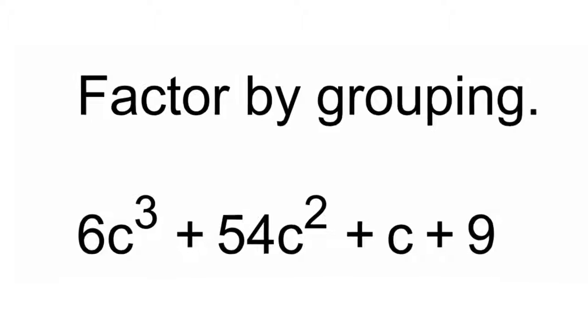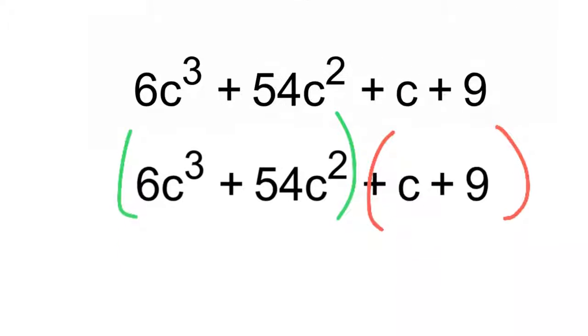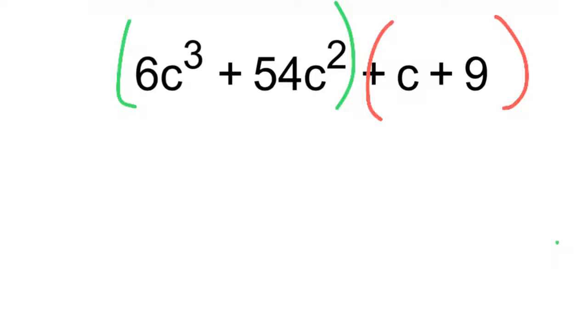The factoring by grouping method starts by putting parentheses around the first two terms and the last two terms. So once you've done that, now you look inside each group and see what you can factor out that's in common.